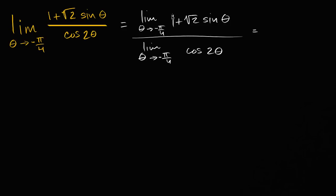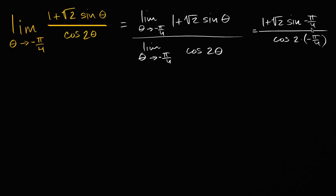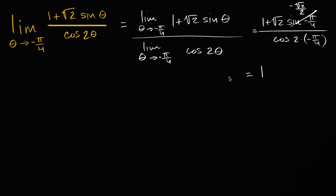This is going to be equal to this expression evaluated at negative pi over four: one plus square root of two times sine of negative pi over four, over cosine of two times negative pi over four. Sine of negative pi over four is negative square root of two over two — this is one of the trig values worth knowing. So the numerator becomes one plus square root of two times negative square root of two over two, which gives us one minus one, equal to negative one.